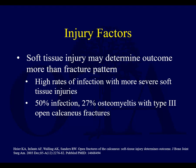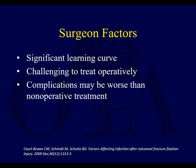Soft tissue injury can determine outcome more than fracture pattern. Horrible blisters that don't heal — big hemorrhagic blisters — are going to be a problem, and open calcaneal fractures have a much higher risk of infection. There are also surgeon factors: this is not an easy fracture to treat and the anatomy is very complicated. They're challenging to treat operatively because you want to wait, but the longer you wait, the harder it can be to get those fractures — especially the primary fracture line — reduced. Complications can end up being worse than non-operative management, so you have to not overextend what you're able to handle as a surgeon.